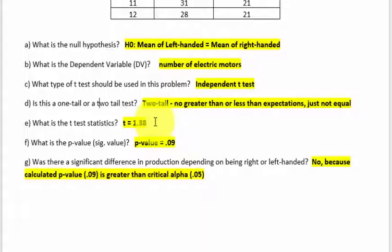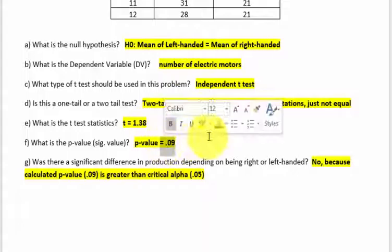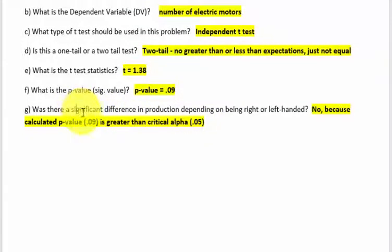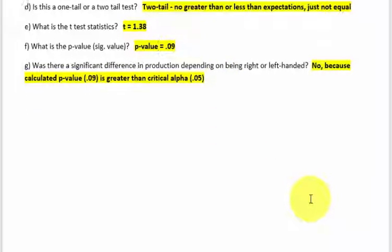Okay, the t-test statistic is 1.38, and the p-value is 0.09. And that means that there was no significant difference at the alpha level of 0.05. That's it. MGZ out.